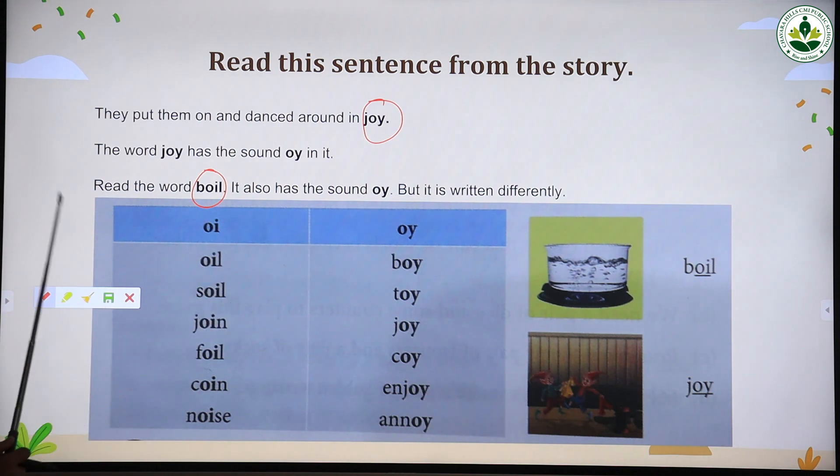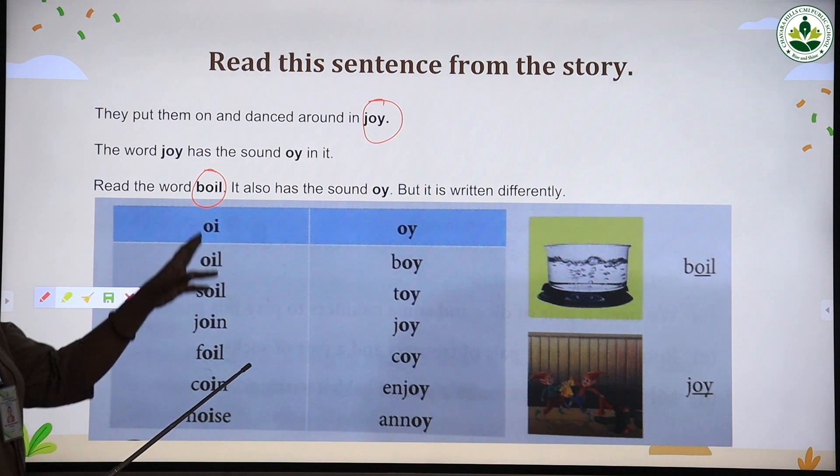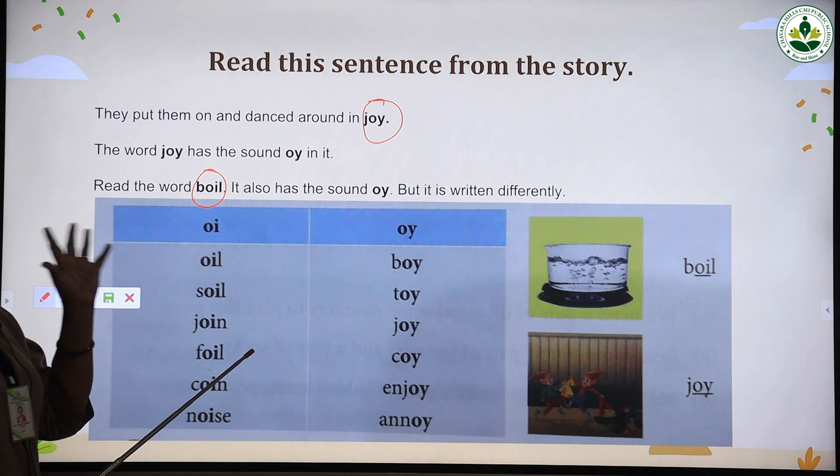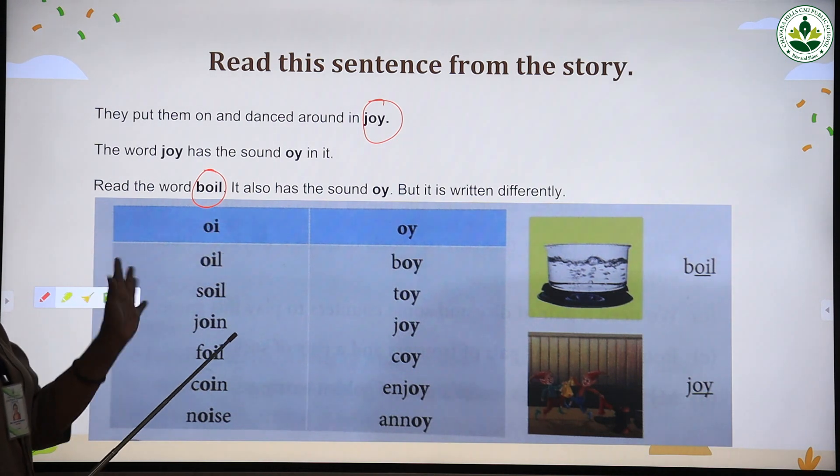First, the words with o-i: oil, soil s-o-i-l, foil f-o-i-l, join j-o-i-n, coin c-o-i-n, noise n-o-i-s-e. In all these words, the letters o and i sound oi.